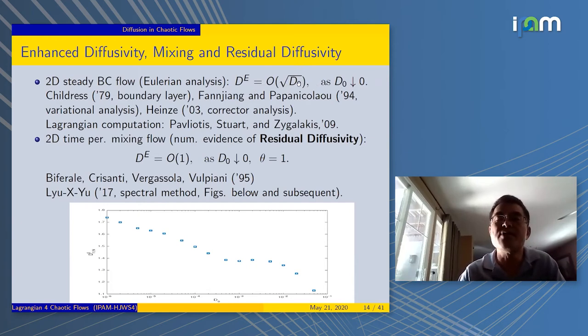It's not D_0, but you get the square root of D_0, which is much bigger than D_0. This was done by many people, starting from Steve Childress with boundary layer analysis, to in the 90s by the variational analysis and the corrector analysis. On the Lagrangian side, there's work by Pavliotis, Stuart, and Zygalakis that compute the solution, simulating the SDE and recover this result.